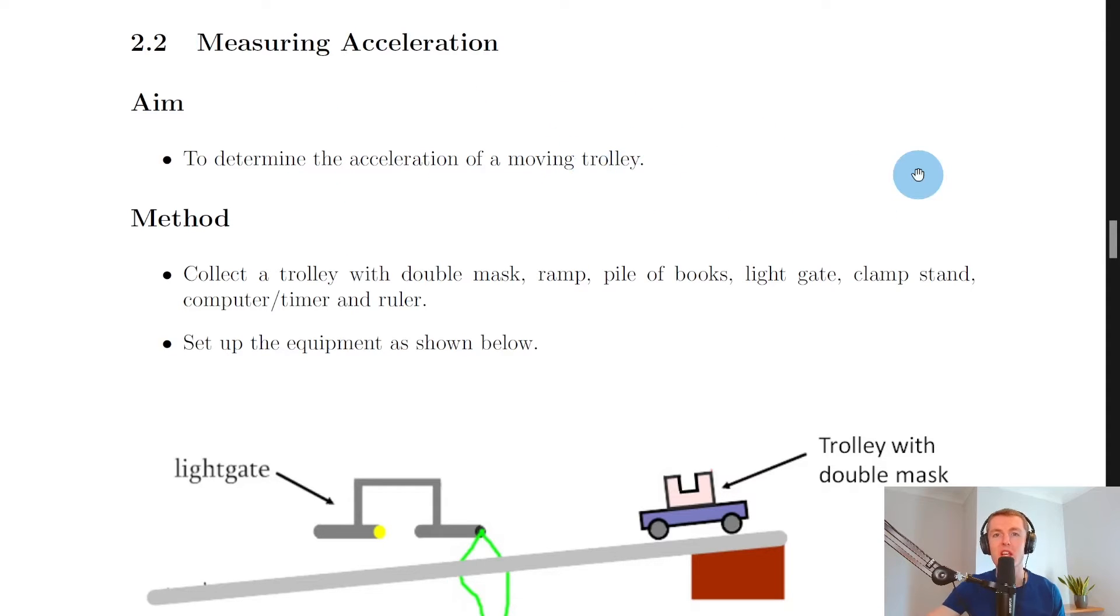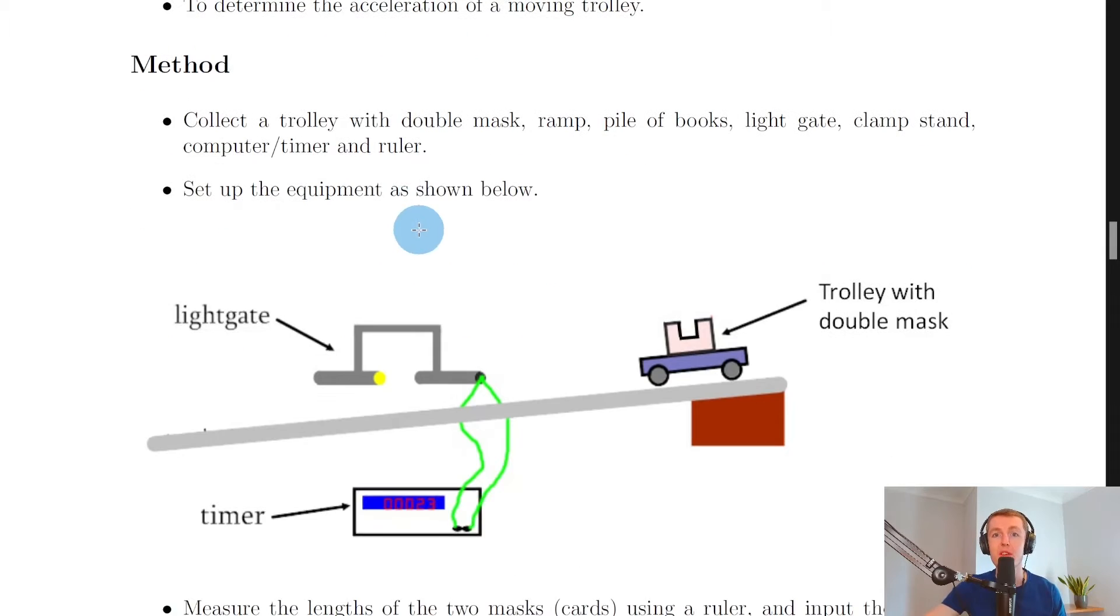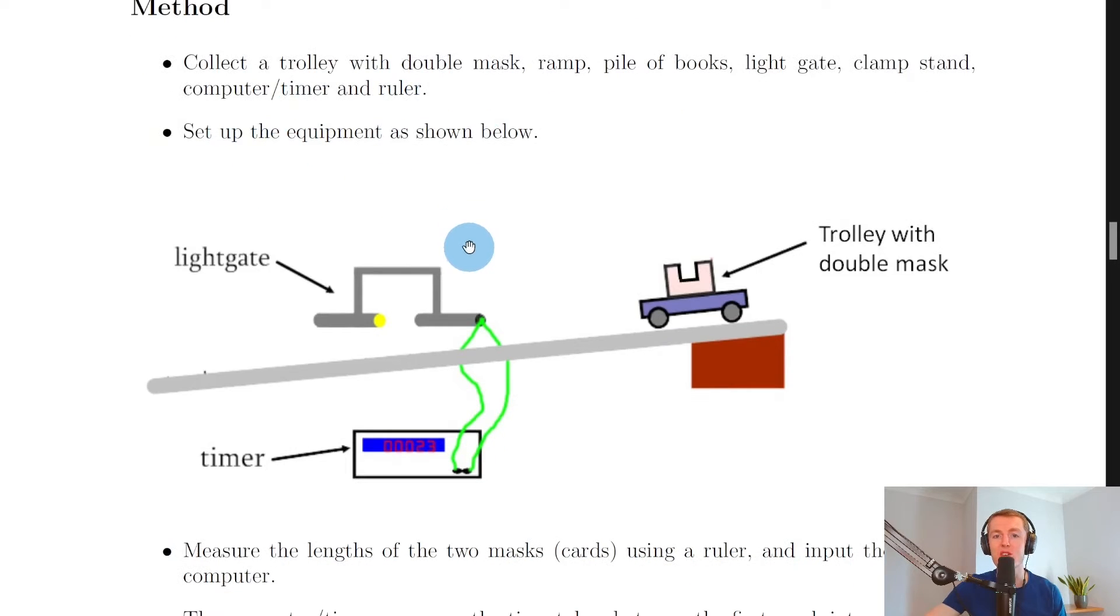The trolley being the car that you would use in the physics classroom. For the methods you would collect a trolley with double mask, ramp, pile of books, light gate, clamp stand, computer or timer, and a ruler, and you would set up the equipment as shown here.